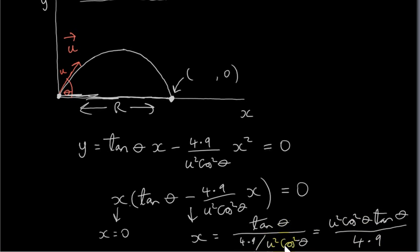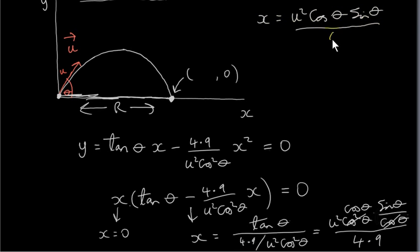We just multiply above and below by u squared cos squared theta to get this here. But then we realize that tan of theta is sine of theta over cos of theta. So we can replace this with sine theta over cos theta. And we see that this cos theta cancels one of the cos theta in cos squared theta. So what we get is x equals u squared cos theta times sine theta divided by 4.9.